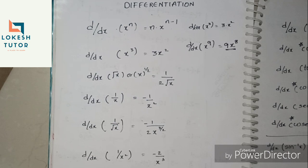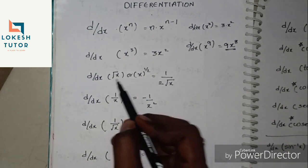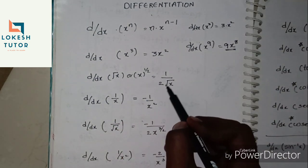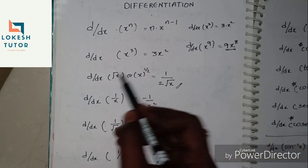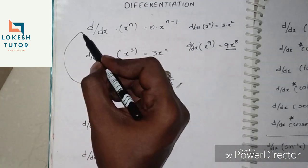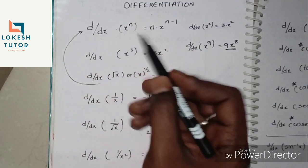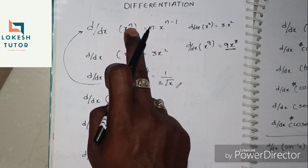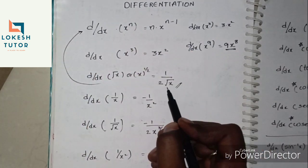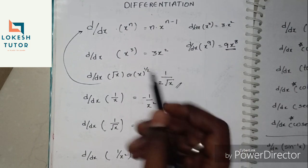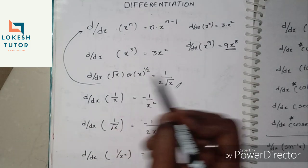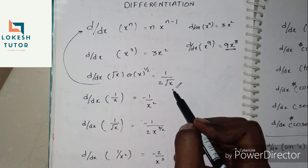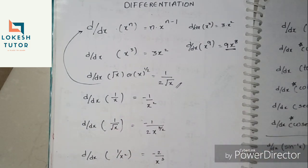d/dx of √x is 1 divided by 2√x. If you don't have this formula memorized, you should remember it: d/dx of √x is 1 by 2√x.